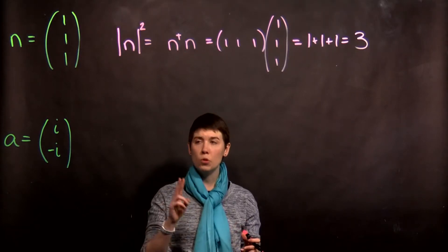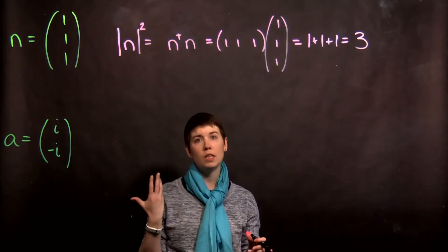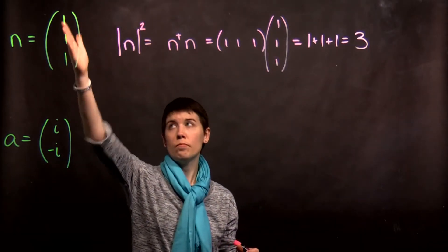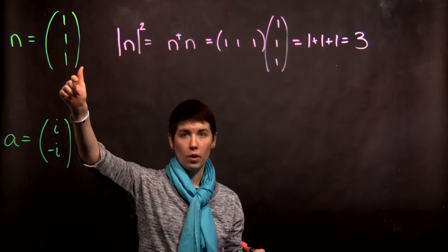In this video, I'm going to go through two examples of normalizing vectors. This first vector is three elements, each one is one.